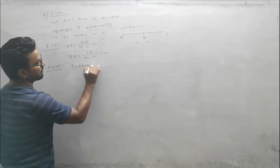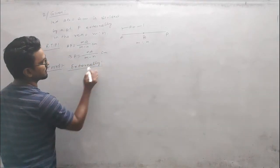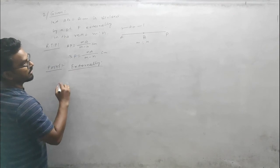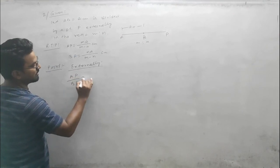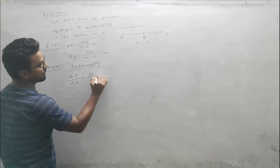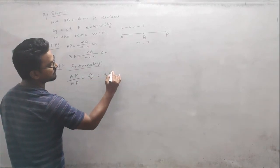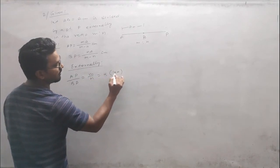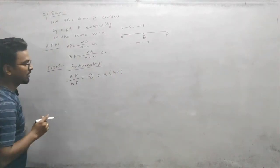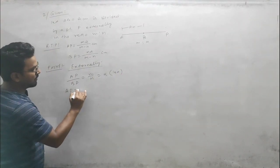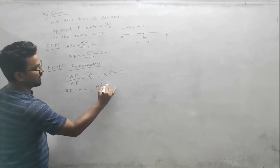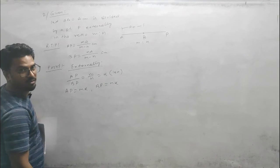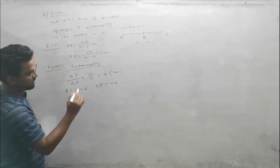We know that for external division, AP/BP = m/n. Let this equal k, so AP = mk and BP = nk.